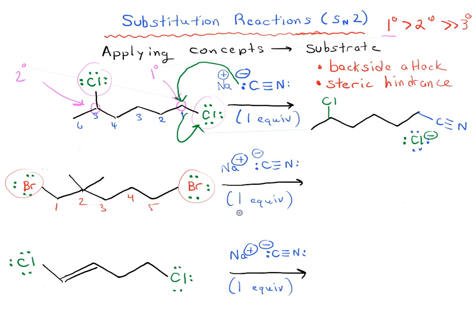We're asking ourselves, is this primary, secondary, or tertiary? Look at carbon 1 - it's attached to one carbon, so this would be primary. Carbon 5 is also attached to one carbon. They're both primary, so we would normally think that they would occur at roughly the same rate, and that's commonly the case.